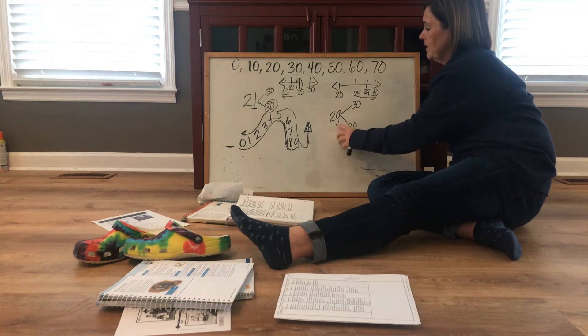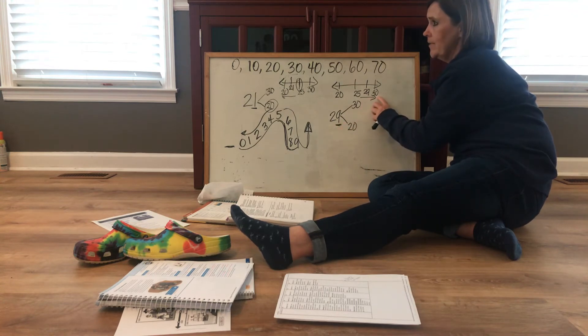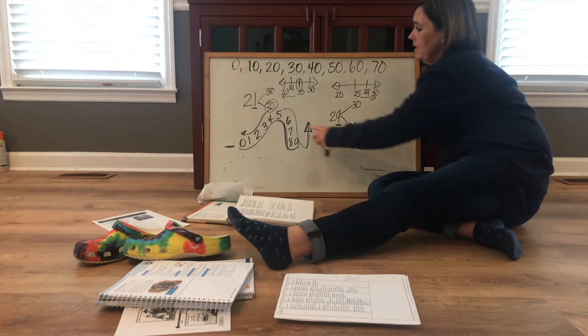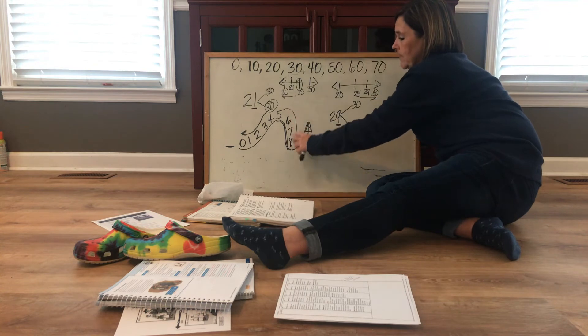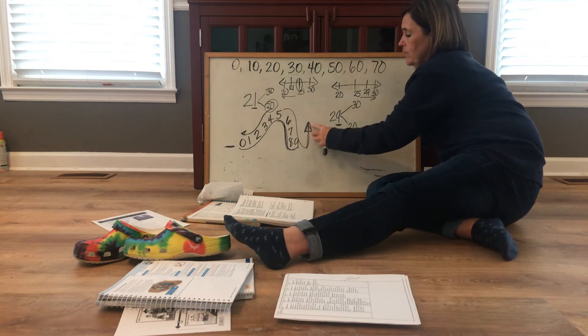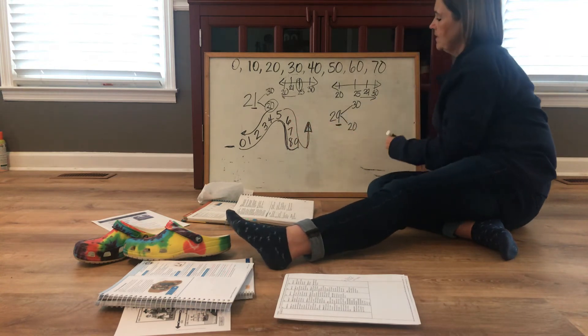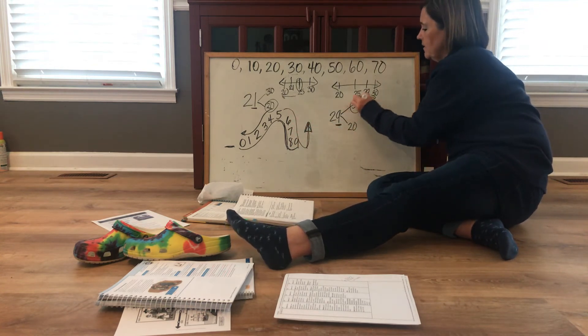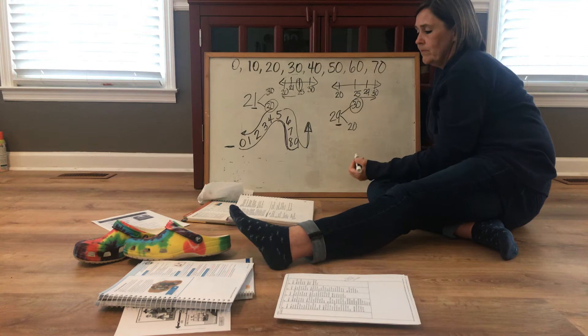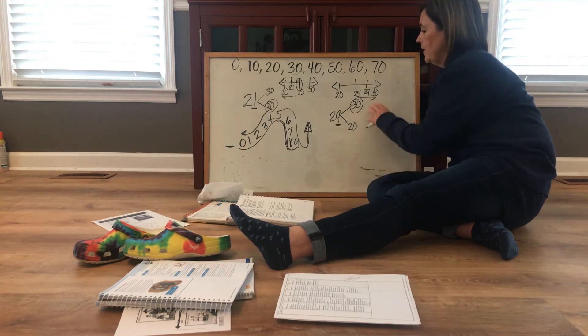29 rounded to the nearest 10 — when I look at it on the number line, when I look at my little skateboard ramp, I see it tells me to round up. So 29 rounded to the nearest 10 would be 30.